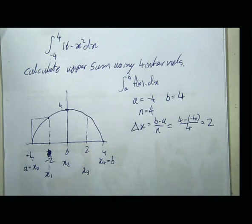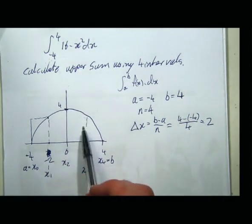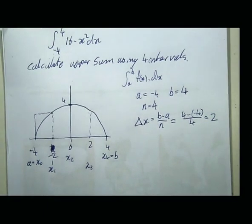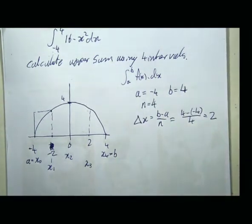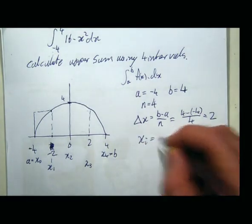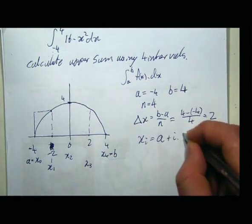This is fairly typical of an exam-type question. We're either going to get you to do this, or there's another option I'll show you in a second. I've got a specific number of intervals, and you'll notice my function turns around in the middle. So xi is always a plus i times delta x, which in this case is -4 plus i times 2.